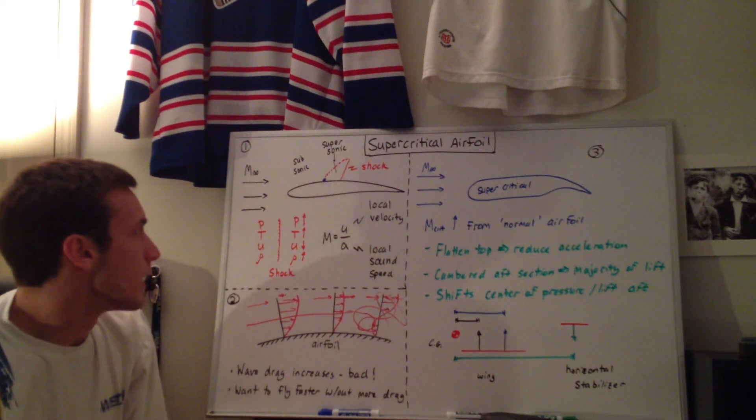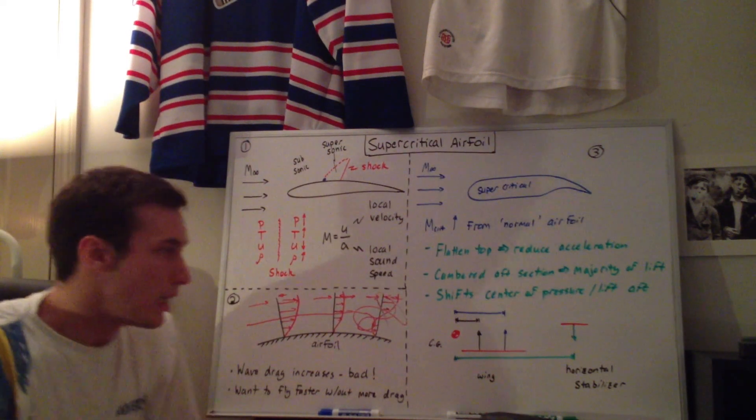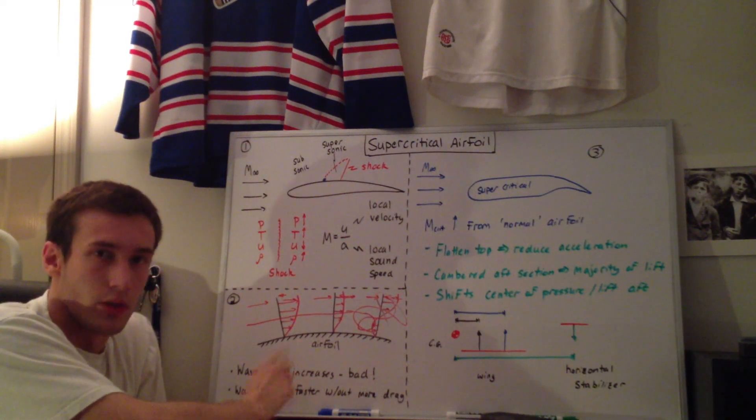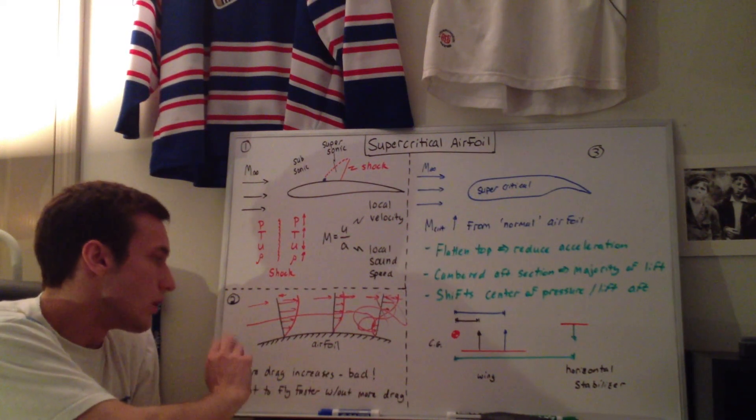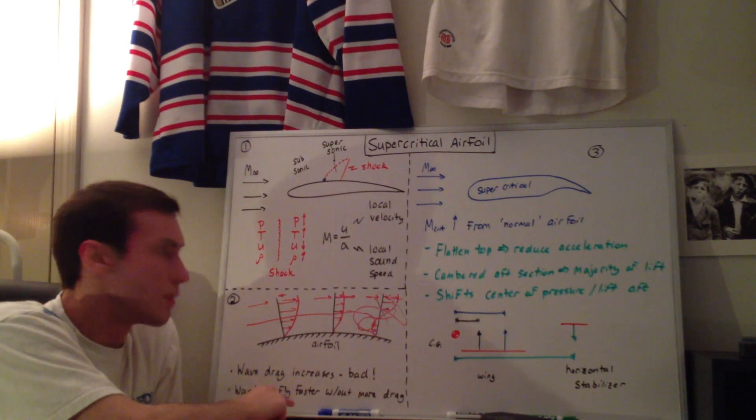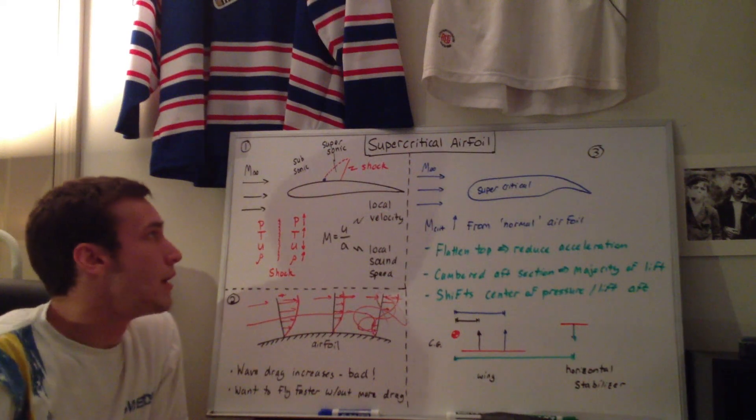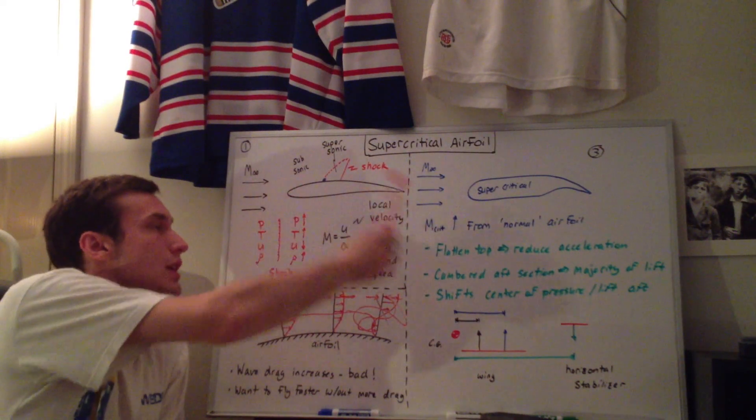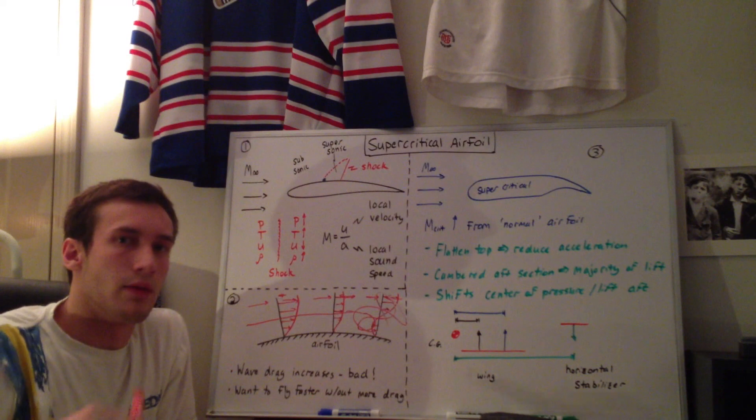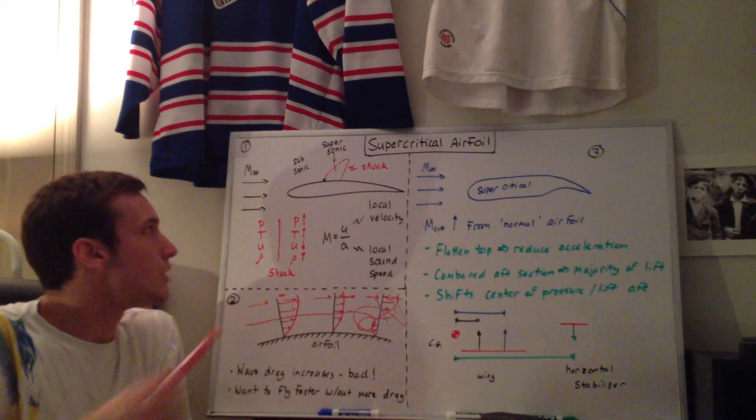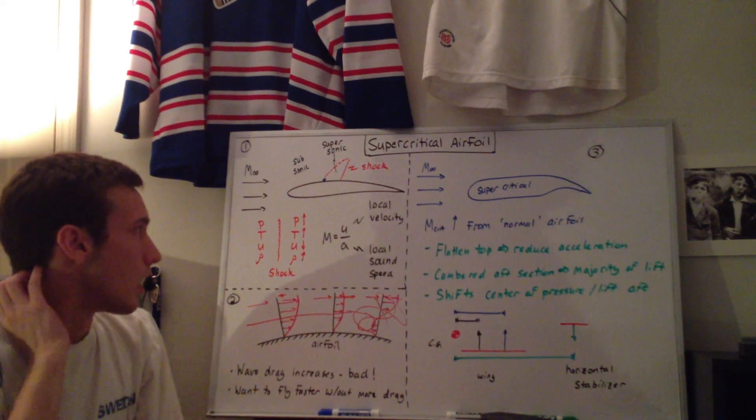So that's how wave drag is caused by shocks, and when the wave drag increases, it's obviously bad. And the goal is really that we want to fly faster, but we don't want that extra drag. So we have to design an airfoil that delays, at least delays the onset of the shock, so we can fly at faster speeds, or faster freestream Mach numbers, without seeing the shocks forming on the airfoil.